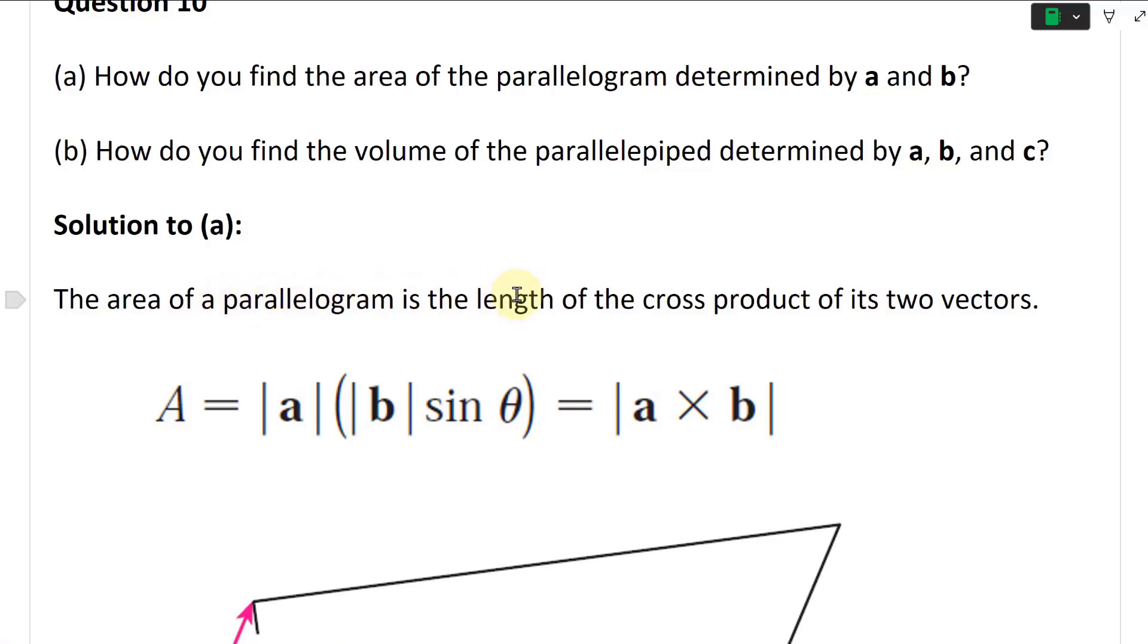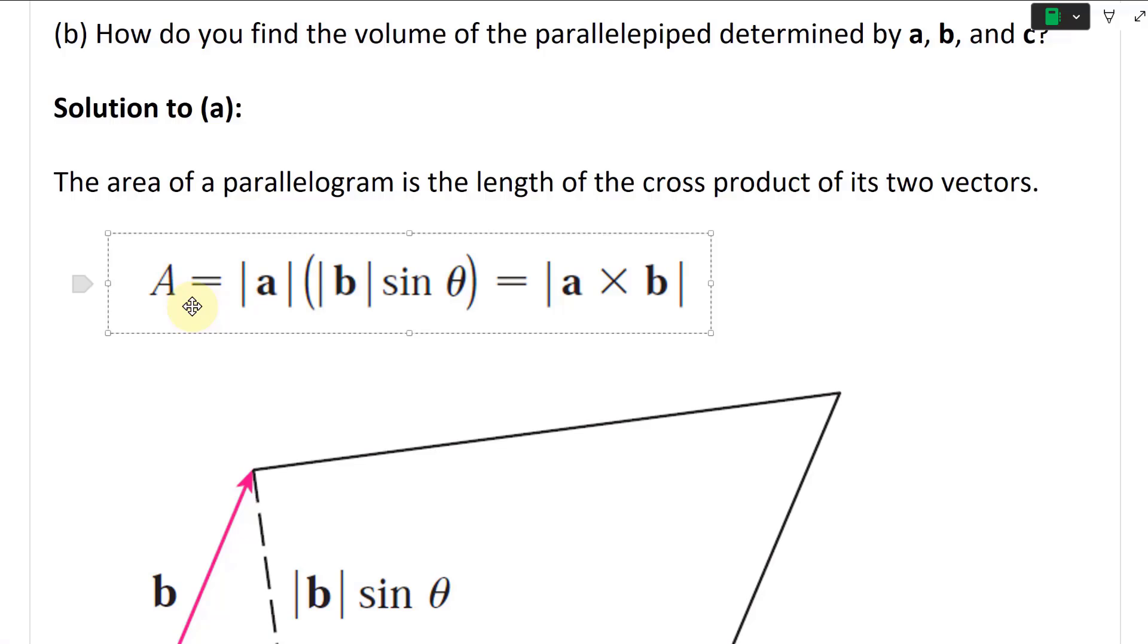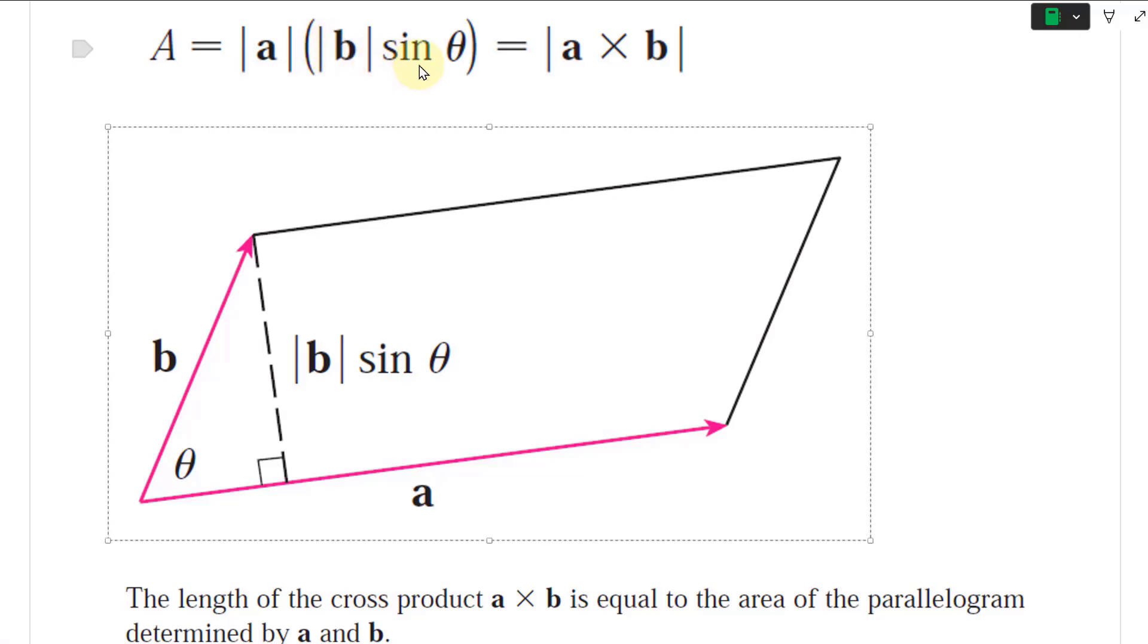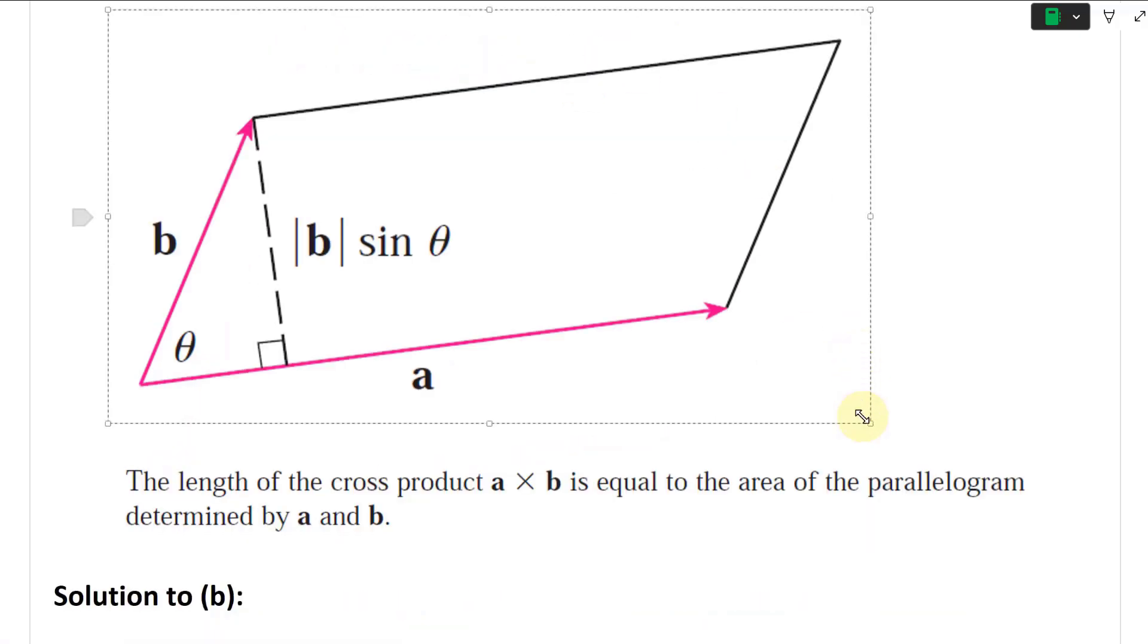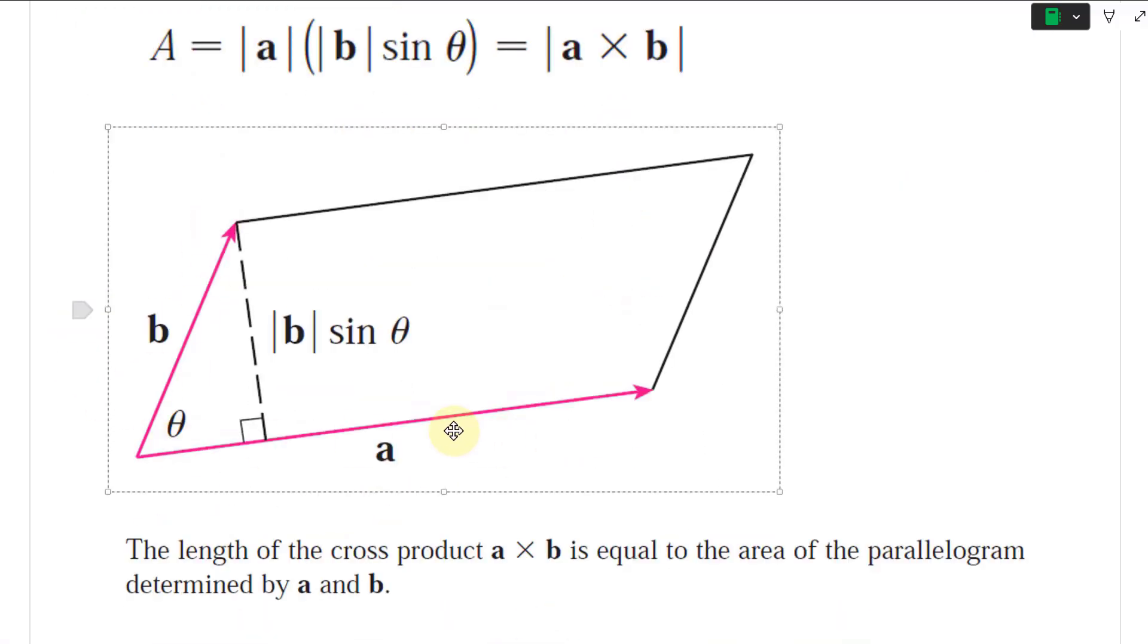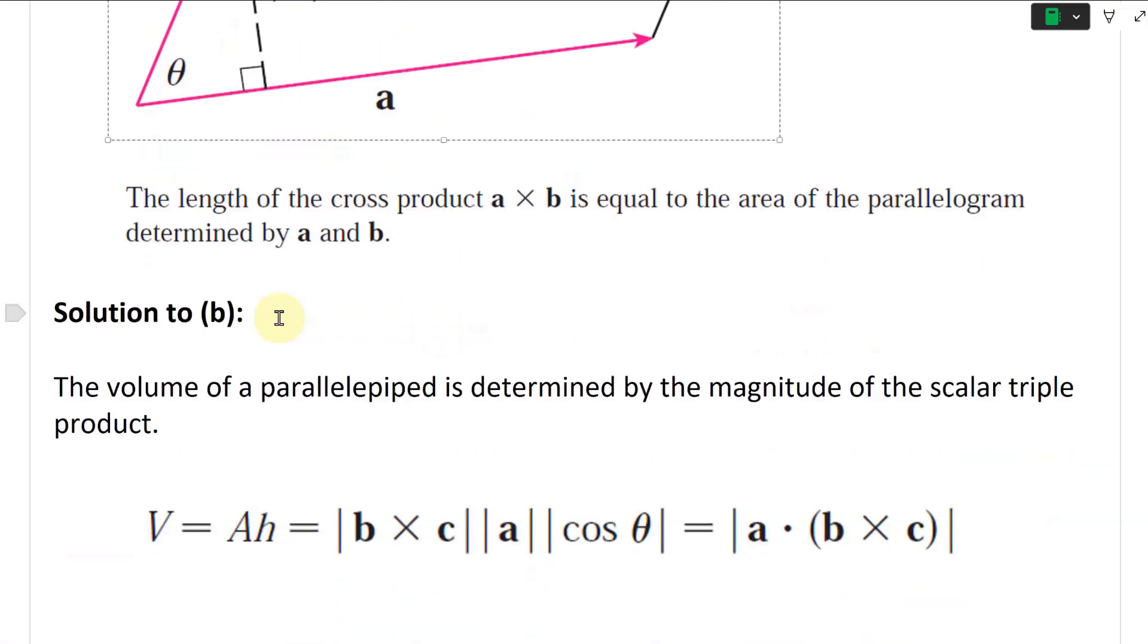So area of a parallelogram, solution to A, is the length of the cross product of its two vectors. So the area of parallelogram is equal to the length of A times the length of B times sine theta, which equals the cross product, the length of the cross product A cross B. And the length of the cross product A cross B is equal to the area of the parallelogram determined by A and B.